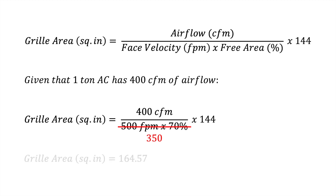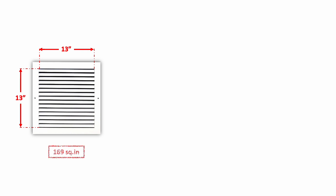The grill size is 164.57 square inches. We can use any grill size that has more than 164.57 square inches. For instance, we can use a 13 inches by 13 inches grill, measured on the inner side of the grill. The grill area is 169 square inches.